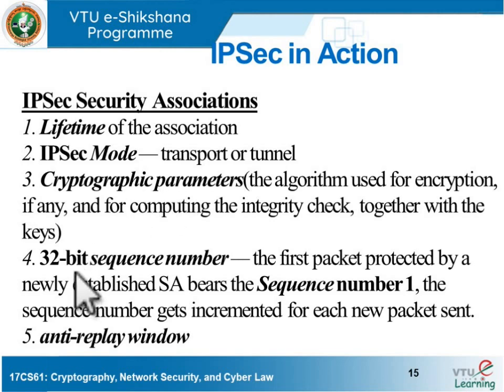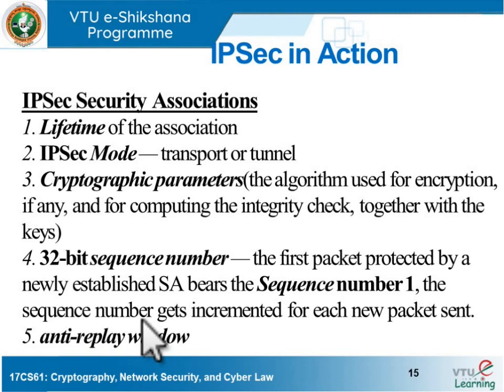The next field in the security association is the 32-bit sequence number, which is allotted after the establishment of a security association between two communicating parties. The first packet will bear a sequence number of one, and every time a new packet is shared with the other communicating party, this sequence number is incremented. The last field is the anti-replay window.